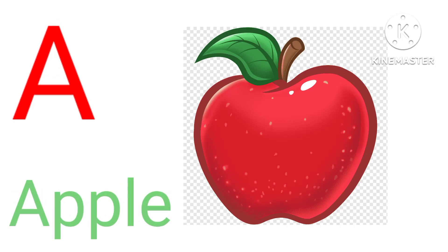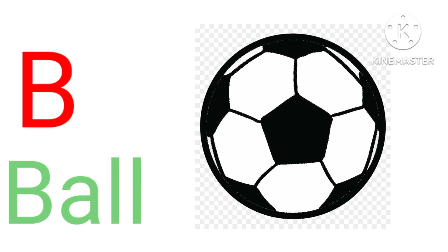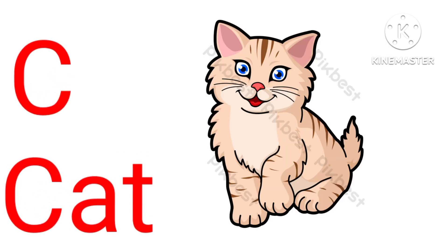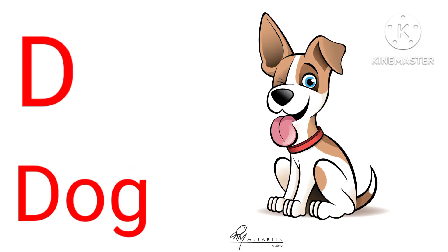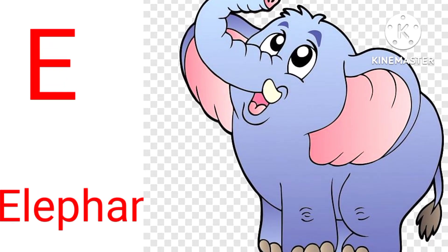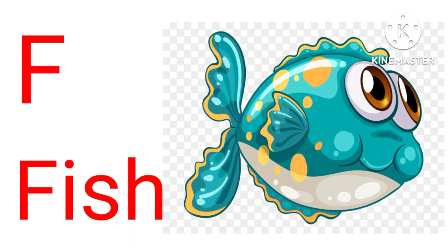A for apple, apple means save. B for ball, ball means ball. C for cat, cat means billy. D for dog, dog means putta. E for elephant, elephant means hathi.